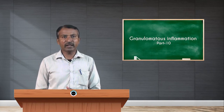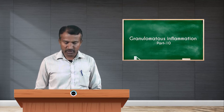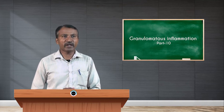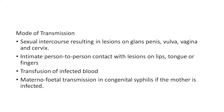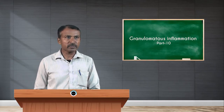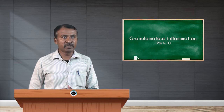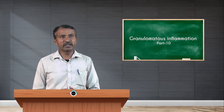Spirochetes are gram-negative, slender, corkscrew-shaped bacteria with axial periplasmic flagella wound around a helical protoplasm. They have an outer sheath which may mask bacterial antigens from the host immune response. Modes of transmission include sexual intercourse resulting in lesions on the glans penis, vulva, vagina, and cervix, and intimate person-to-person contact with lesions on the lips, tongue, or fingers.